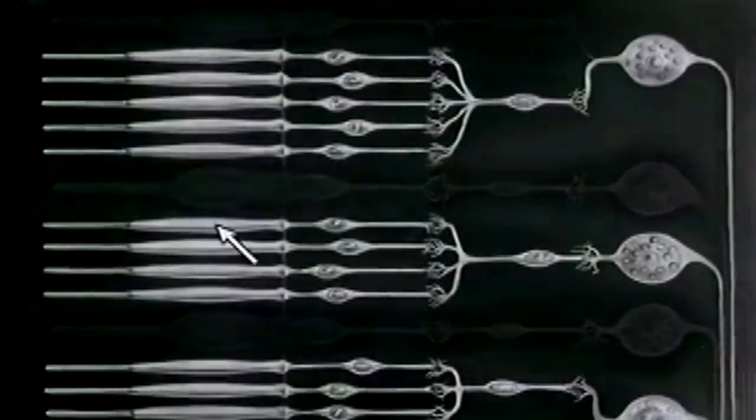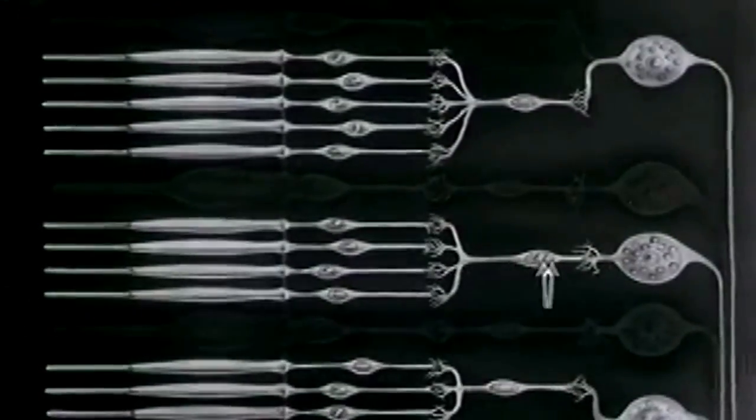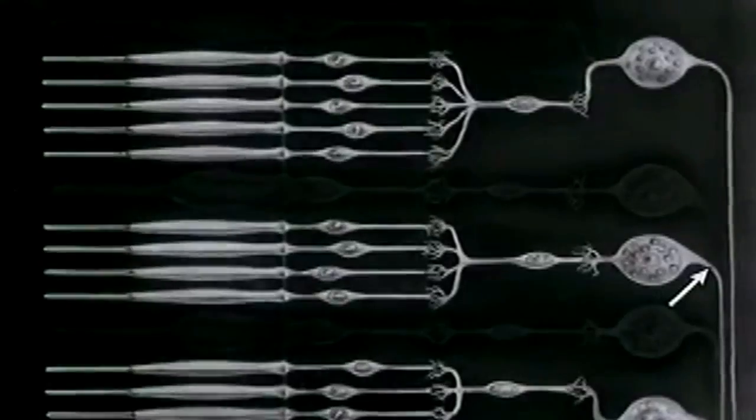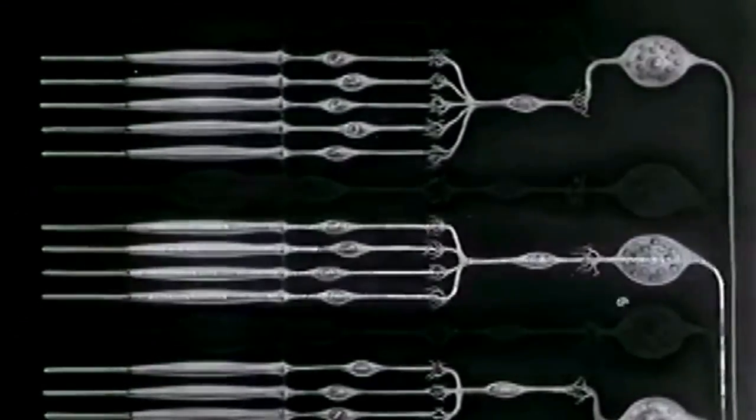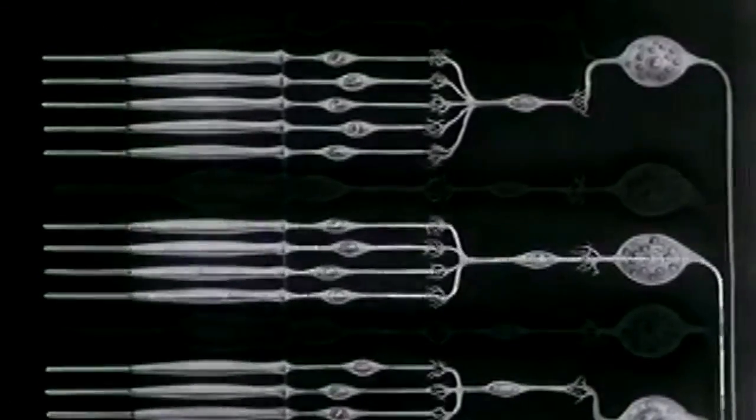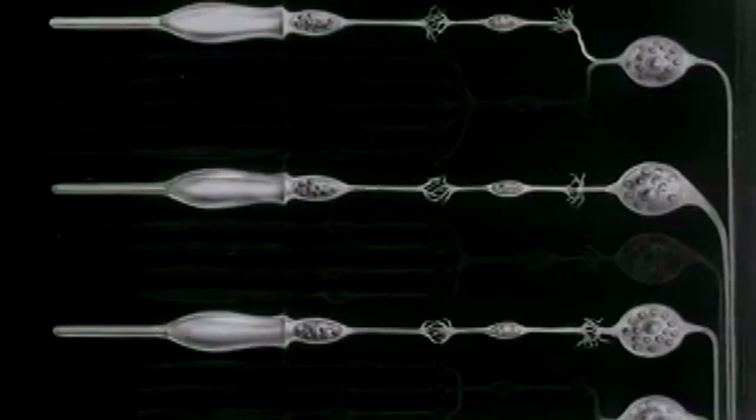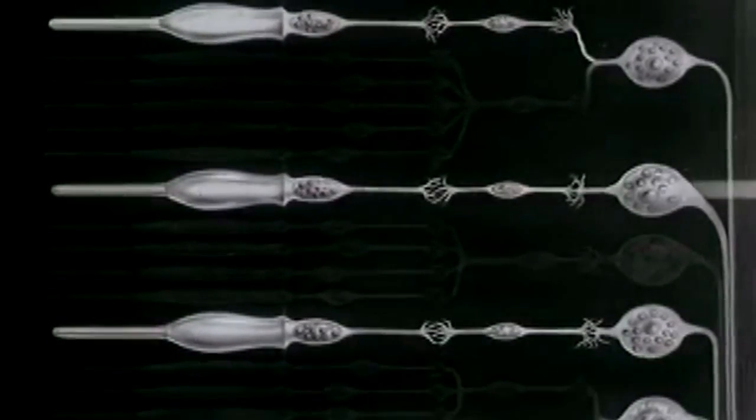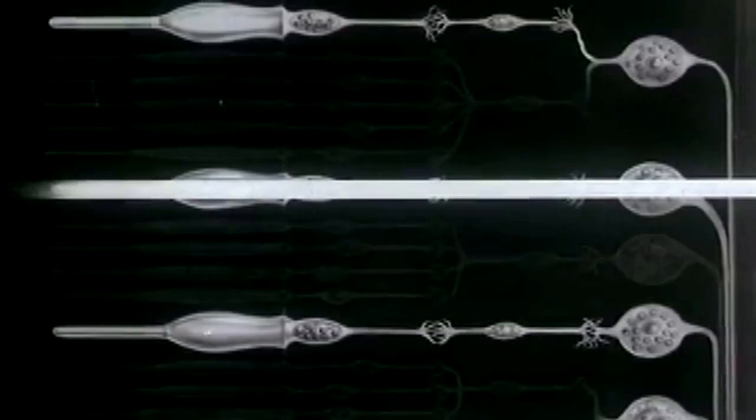The rod visual cells are hooked up in groups to one optic nerve fiber, so that they cooperate in setting up a nervous current. For this reason, they can cause a current flow in very dim light. The cones, however, are not usually hooked up together, so the light must be brighter before the cones can function.